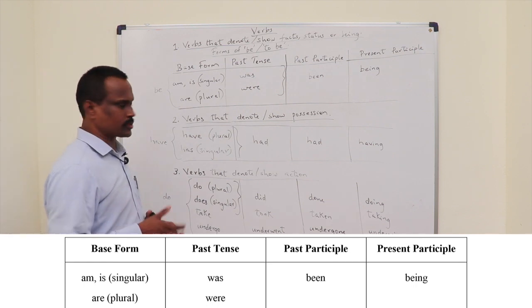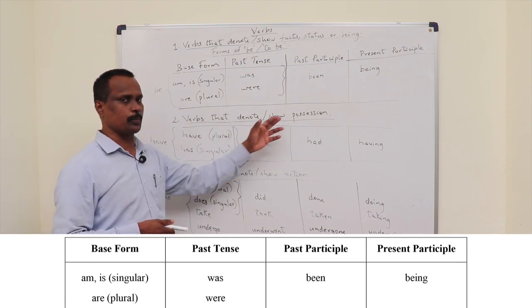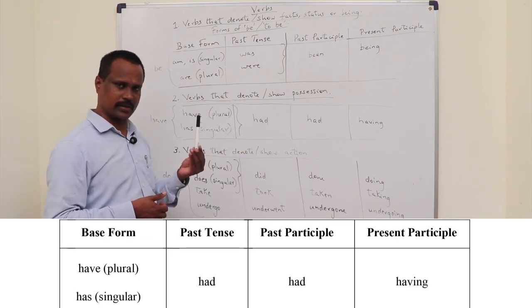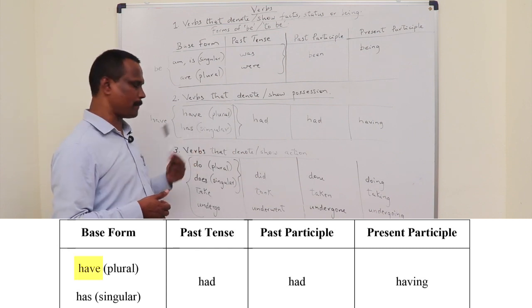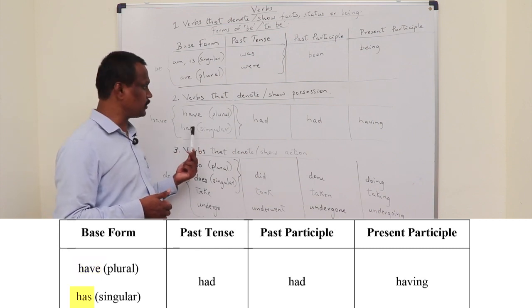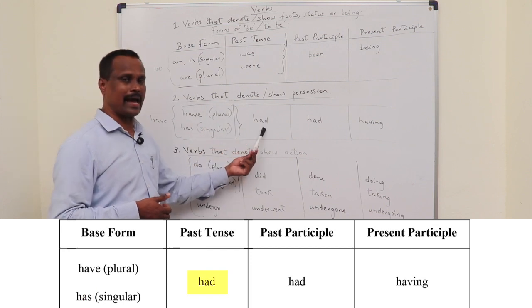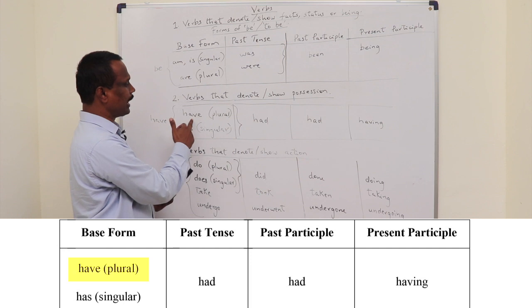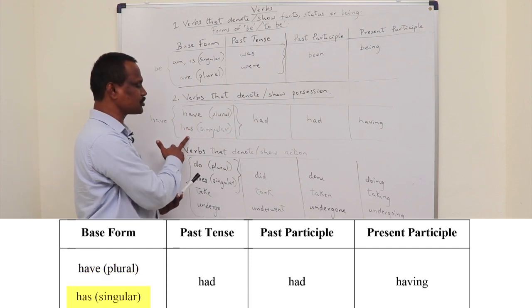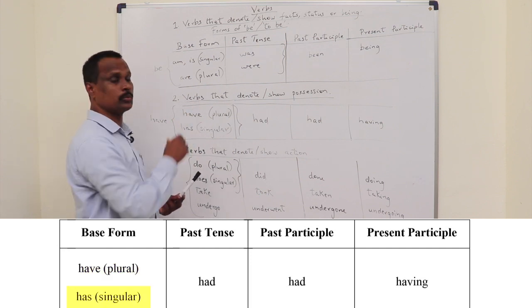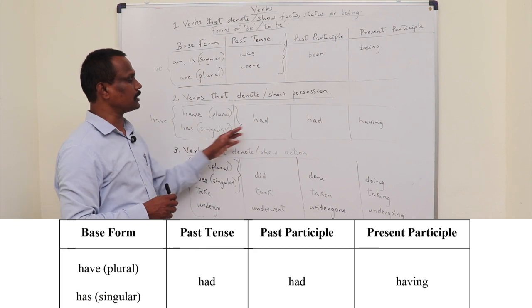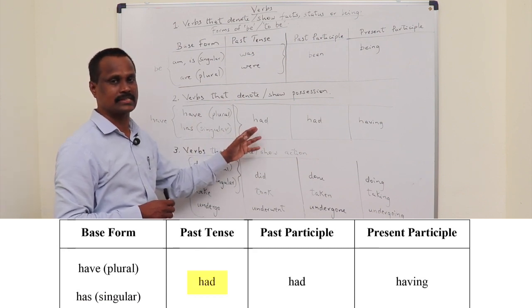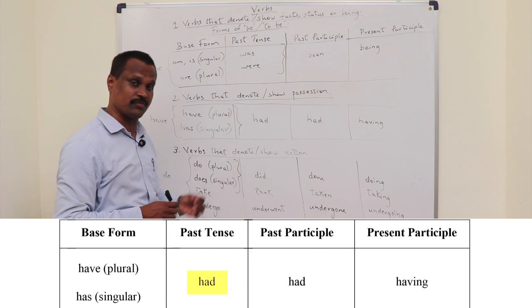Now coming to the second category, that is the verbs that denote or show position. It could be, for example, I have a pen. She has a pen. And the past tense is had for both. Have is the plural form and has is the singular form to show a position. And for both, the past tense is the word had.